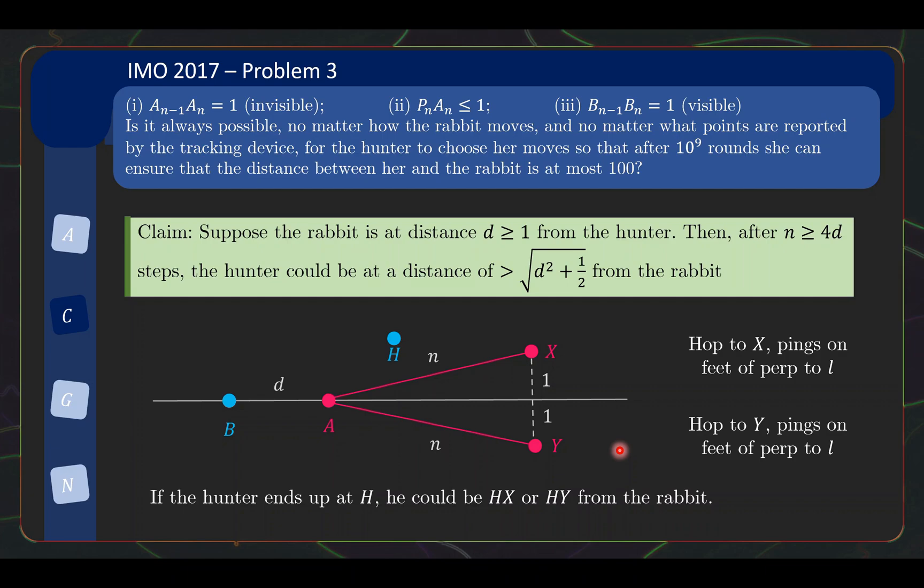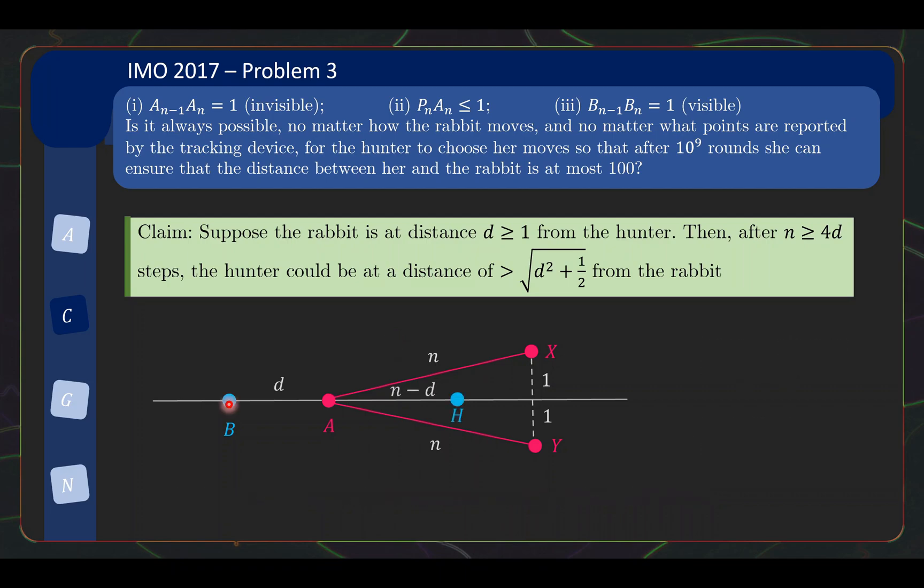So, what is the best case scenario for the hunter? The best choice, so let's take a look at where H can be. So, firstly, the hunter will cover a distance of n, so it will be a circle of radius n centered at B. So, if it is at this point, I claim that actually this minimizes the max of HX, HY. For any other H that the hunter ends up with, it is only going to be worse. There will be one scenario where the distance is even bigger than HX over here. So, you can very quickly check that this is indeed the minimum of max HX, HY. And from here, we can now bound what is the distance.